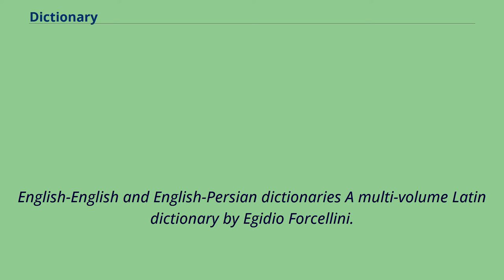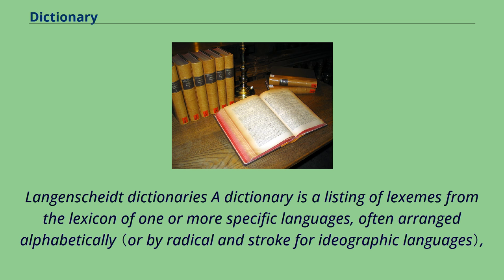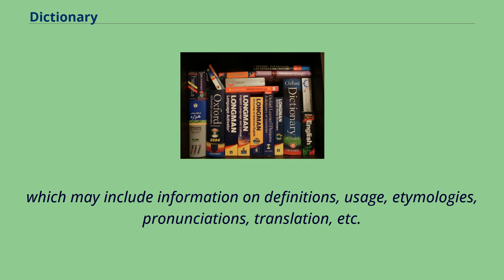A dictionary is a listing of lexemes from the lexicon of one or more specific languages, often arranged alphabetically, which may include information on definitions, usage, etymologies, pronunciations, translation, etc. It is a lexicographical reference that shows interrelationships among the data.